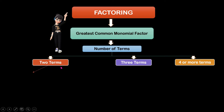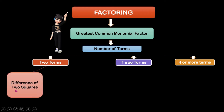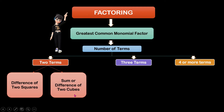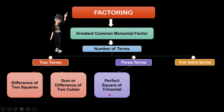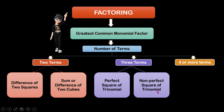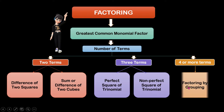If the given is two terms, we can solve it by difference of two squares or by the sum or difference of two cubes. If the given has three terms, we can use perfect square trinomial or the different methods for non-perfect square trinomial — the slide divide and bottoms up, trial and error, and the AC method. And last, for four or more terms, we have factoring by grouping.